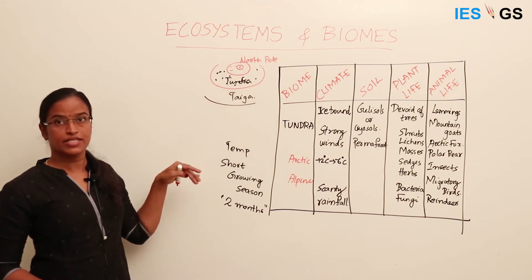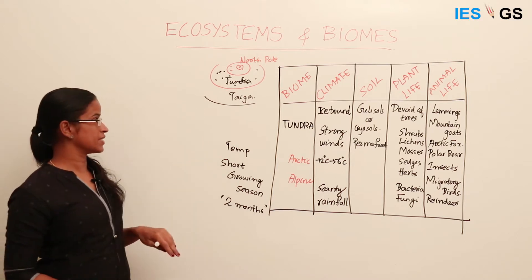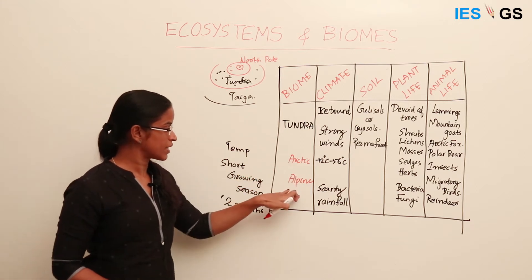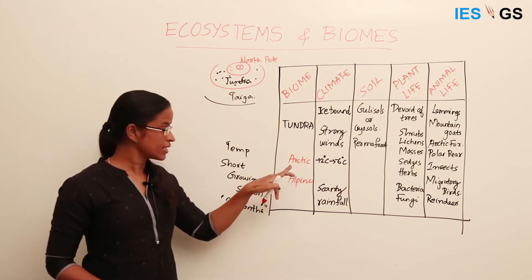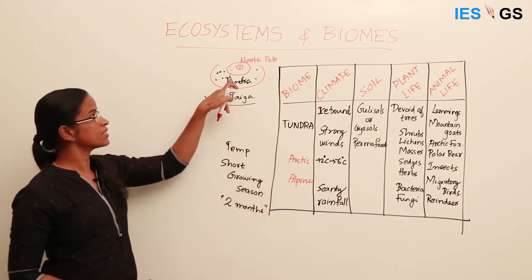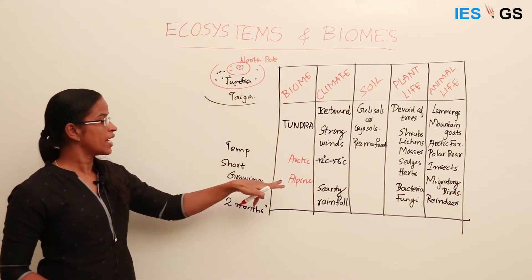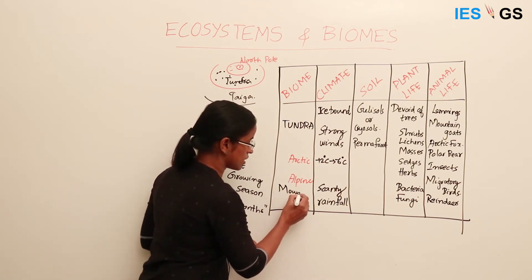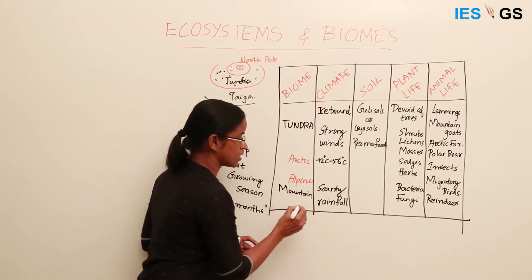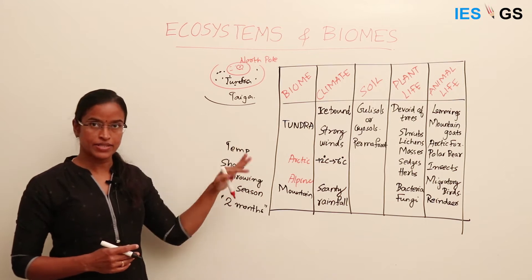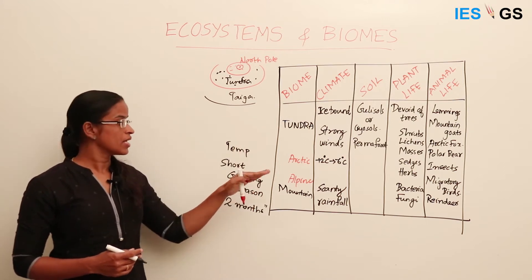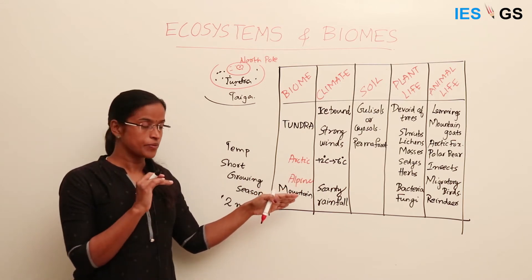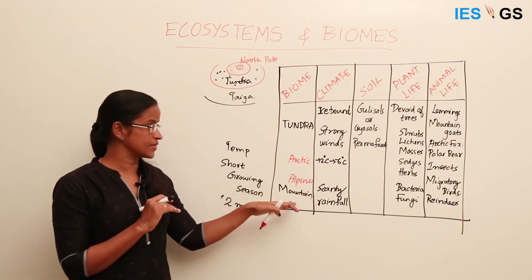In the South Pole, it is a permanently ice-covered region. There are two types of Tundra biomes: Arctic and Alpine. Arctic is the region surrounding the North Pole, and Alpine are the mountain ecosystems. As height increases, temperature decreases in the mountains, and after a particular height when trees are not supported, there exists Tundra vegetation.